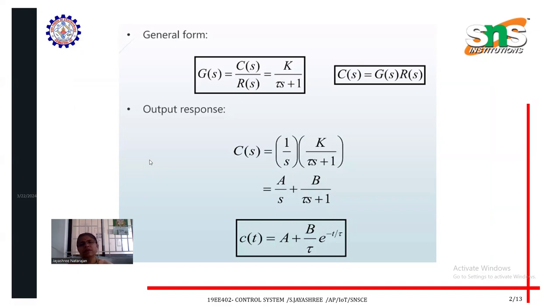This is the general form. General form of G of s equals C of s divided by R of s equals K divided by tau s plus 1. What is my C of s? Output equals G of s into R of s, that is transfer function into input signal.